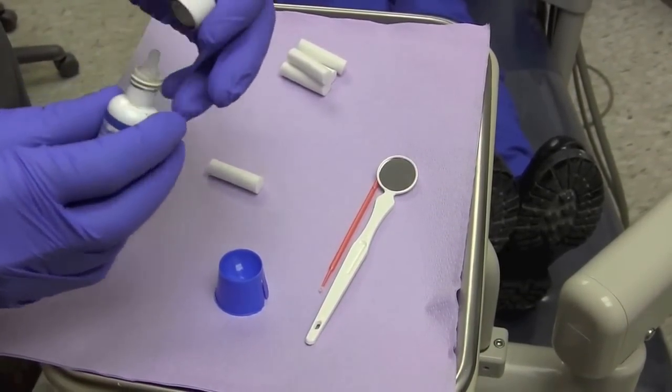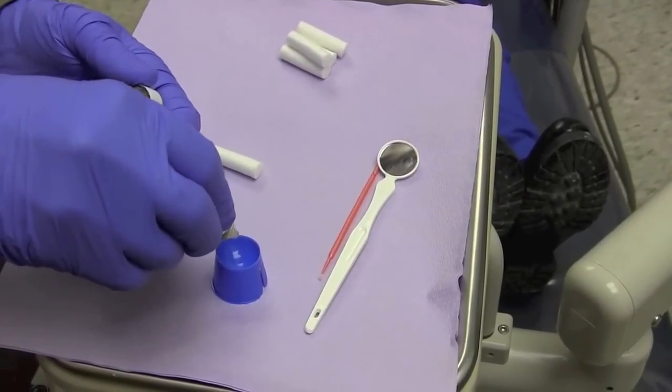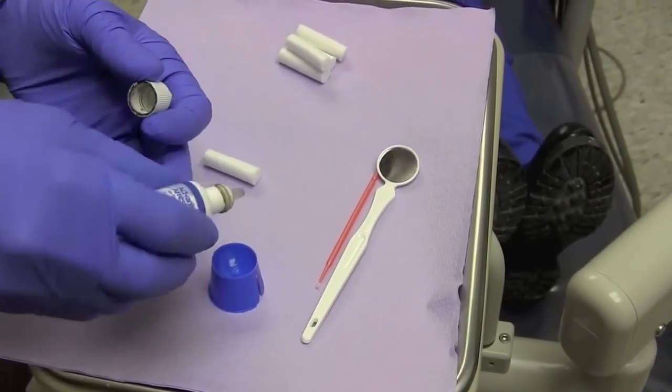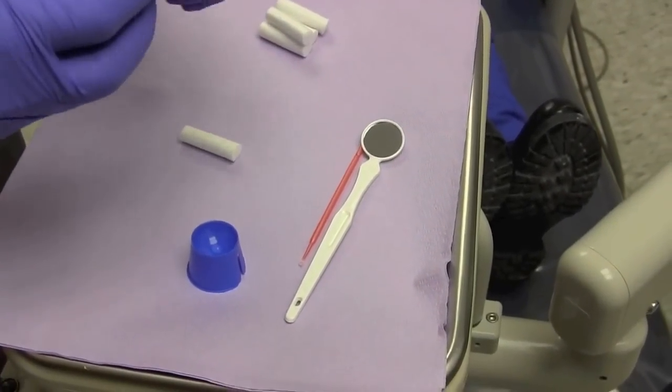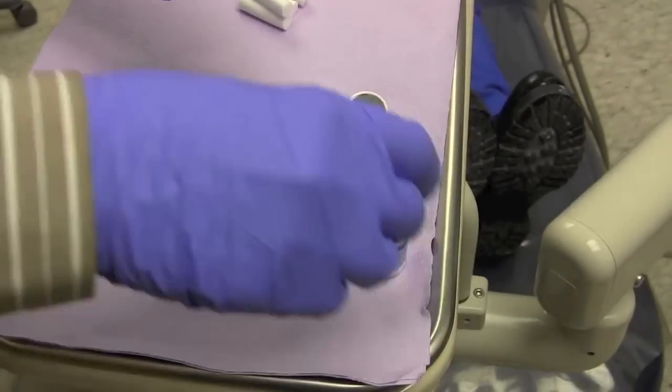You start by applying one drop into a plastic dappin dish, just like so. Anticipating that your gloves will stain everything.